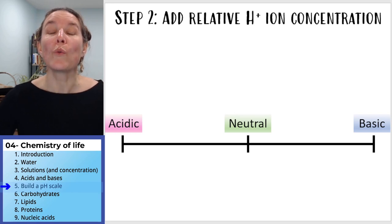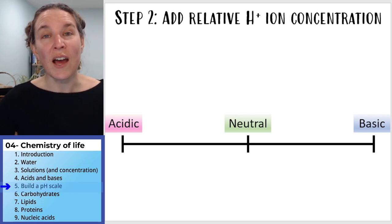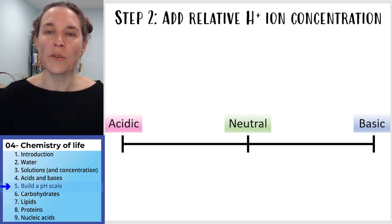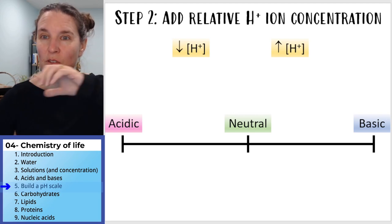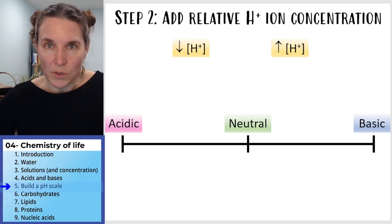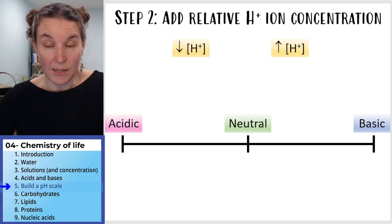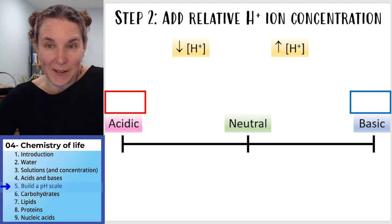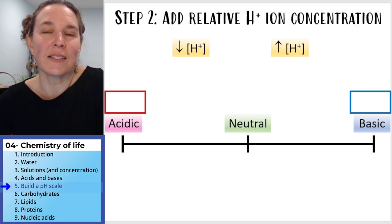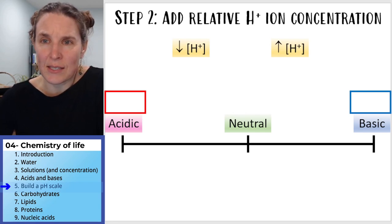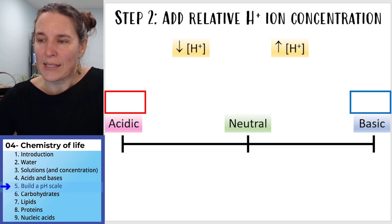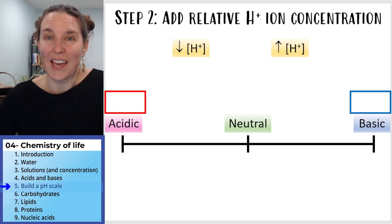Next we're going to add relative hydrogen ion concentration. Where do you expect a high hydrogen ion concentration, and where do you expect a low hydrogen ion concentration? I've given you symbols to add — you're going to add them somewhere. I have a box for each of them. Take a minute and figure out which end — the acidic end or the basic end — gets the low hydrogen ion concentration.